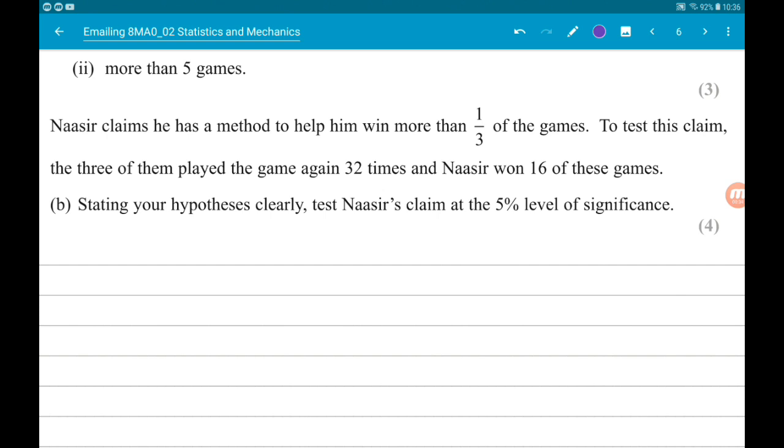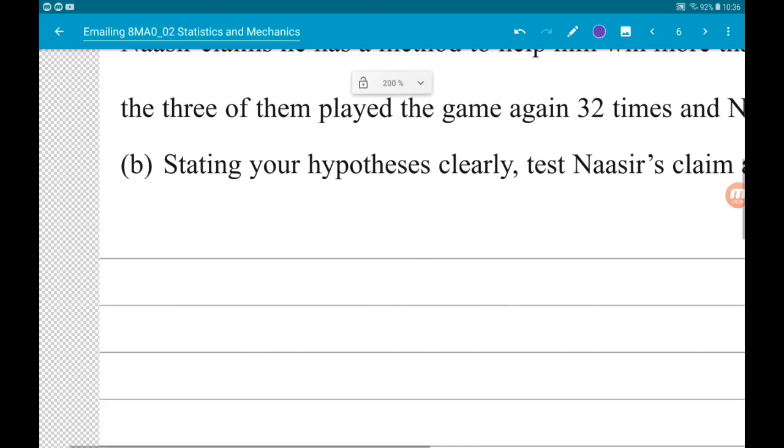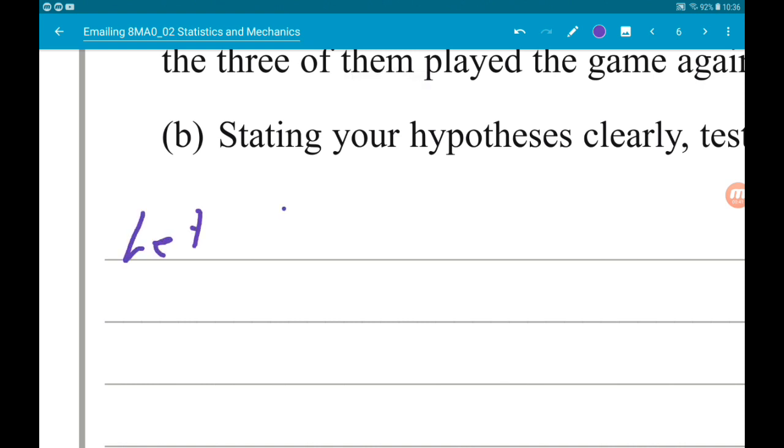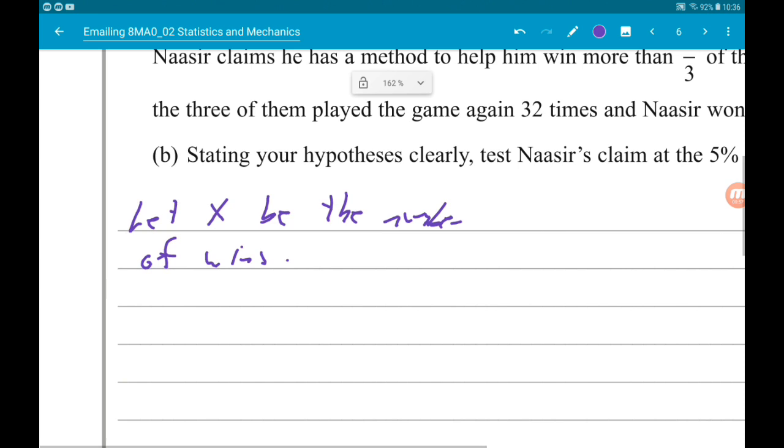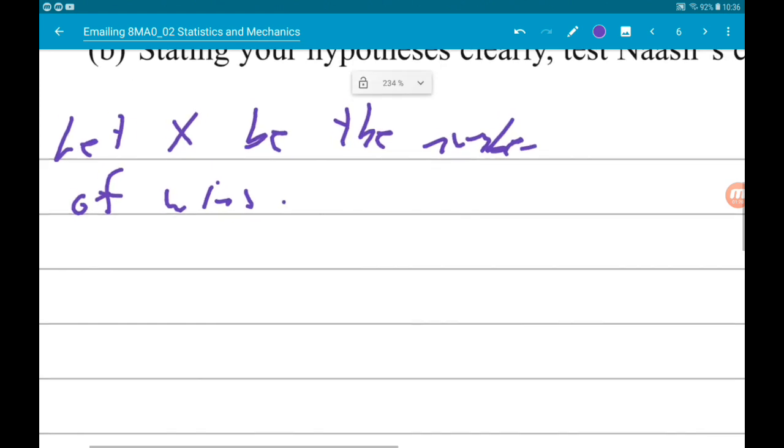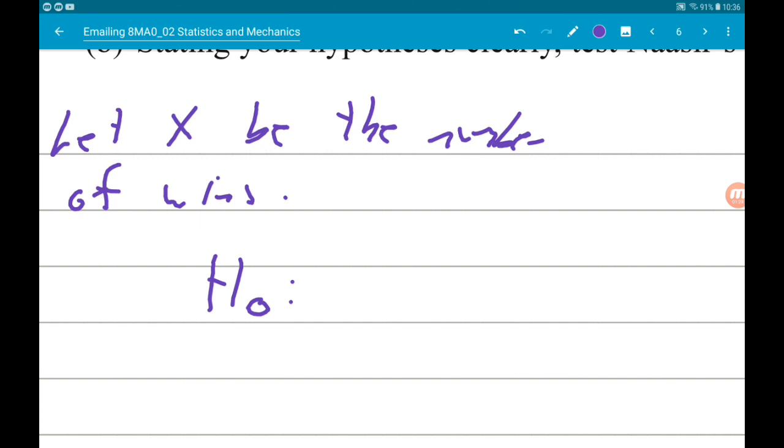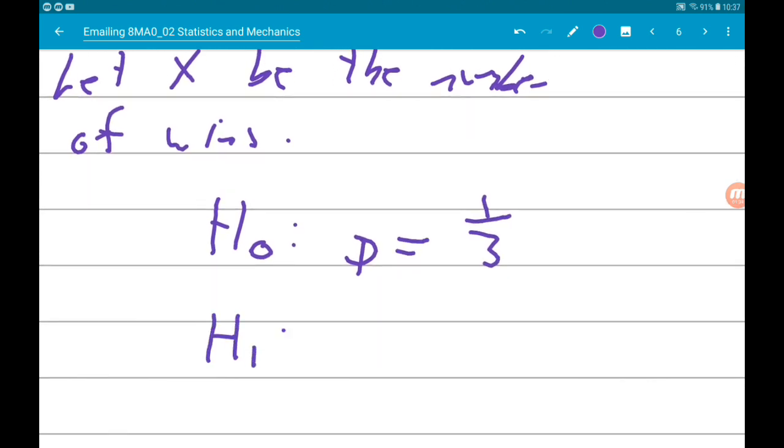A hypothesis test. Let x again be the number of wins. We need two hypotheses: the null hypothesis H₀ and the alternative hypothesis H₁. H₀ is always the one where we set the probability equal to a number. So H₀ is that the probability stays at one third. H₁ is that the probability is greater than one third.